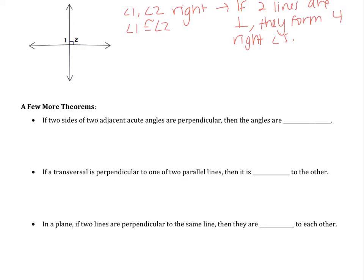A few more ideas. If two sides of two adjacent acute angles are perpendicular, then the angles are what? Let's draw this out: one acute angle and then another adjacent acute angle. Adjacent means that they share a side, so if they share that side in the middle, these are adjacent acute angles. Now it says if the two outer sides are perpendicular, then what is true about the angles? We notice that our two angles are going to sum to 90, which means that they are complementary.